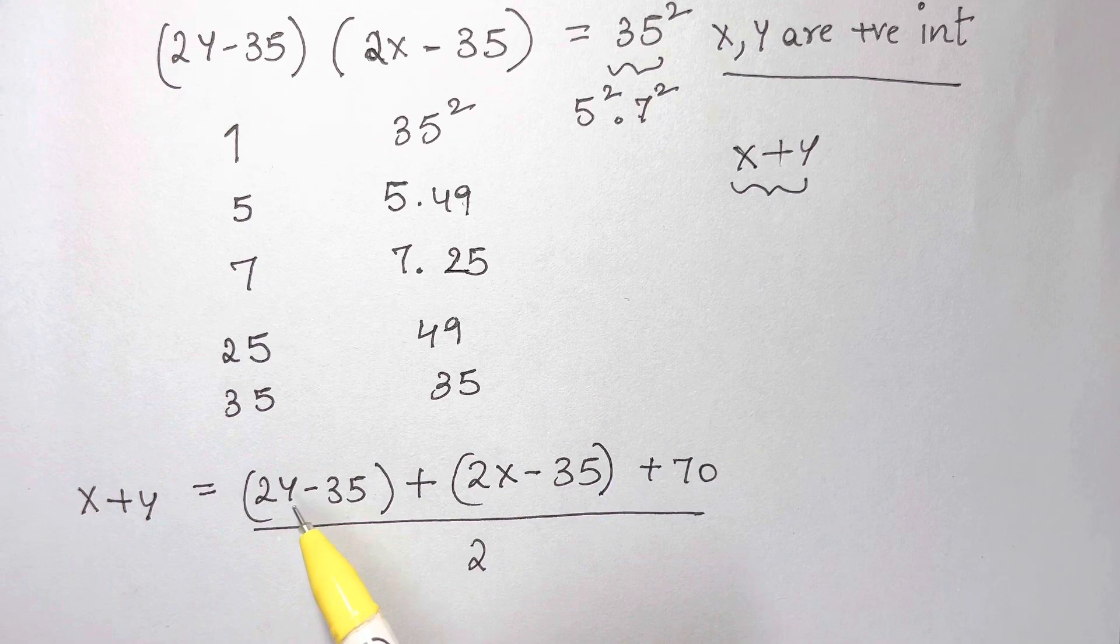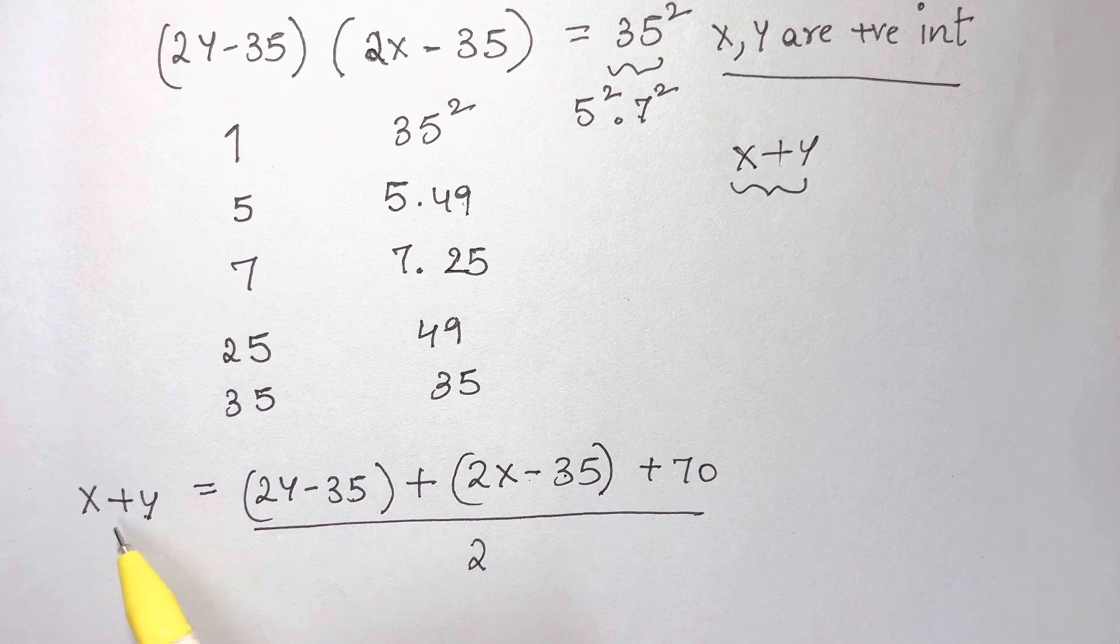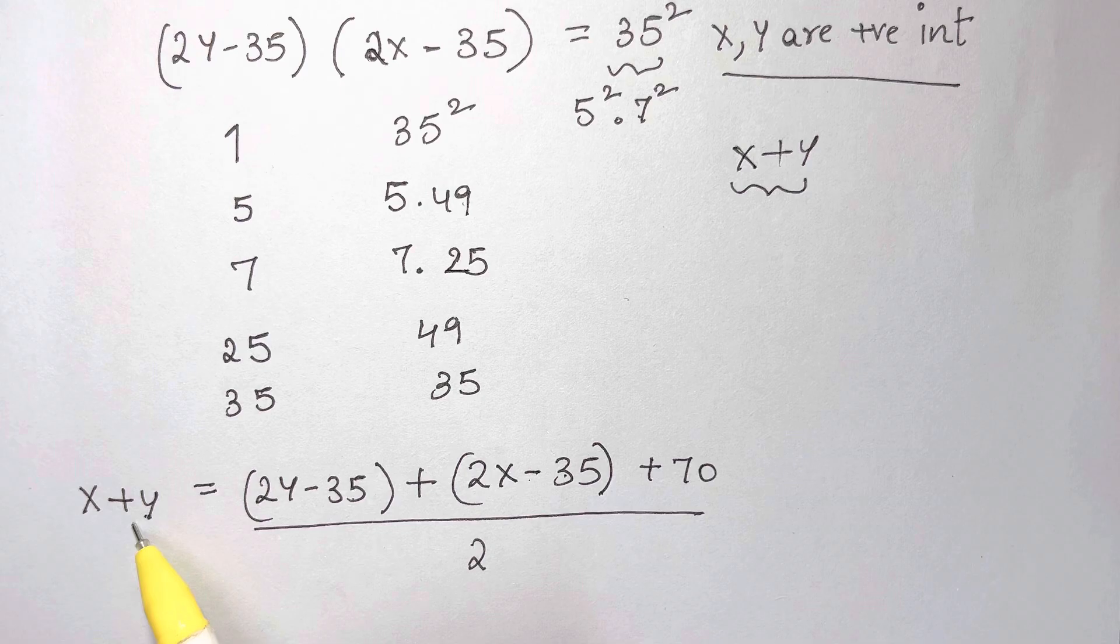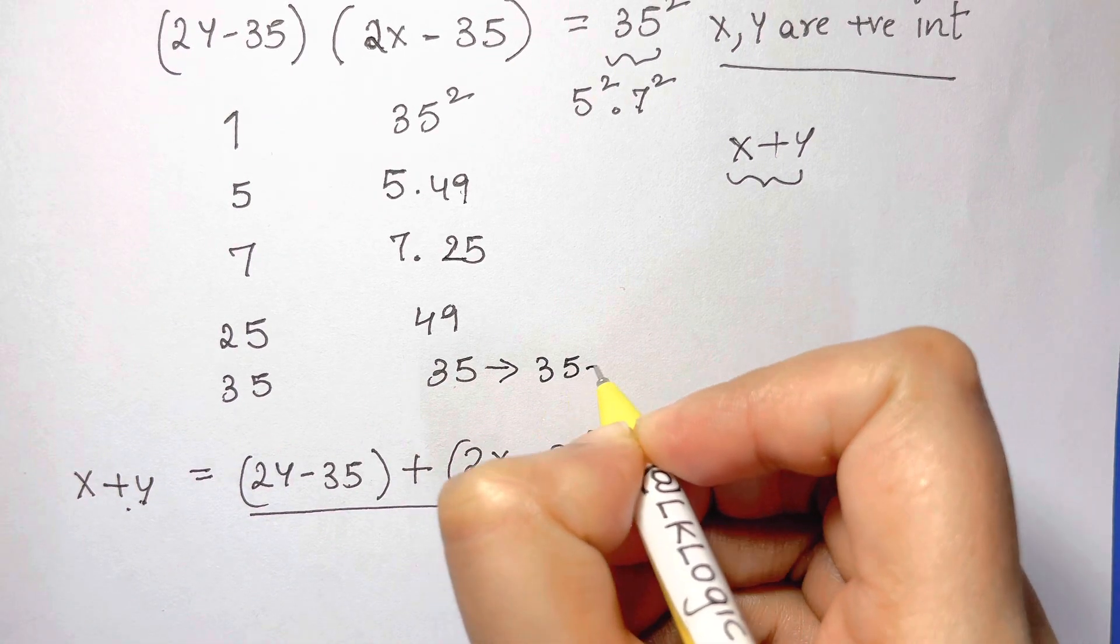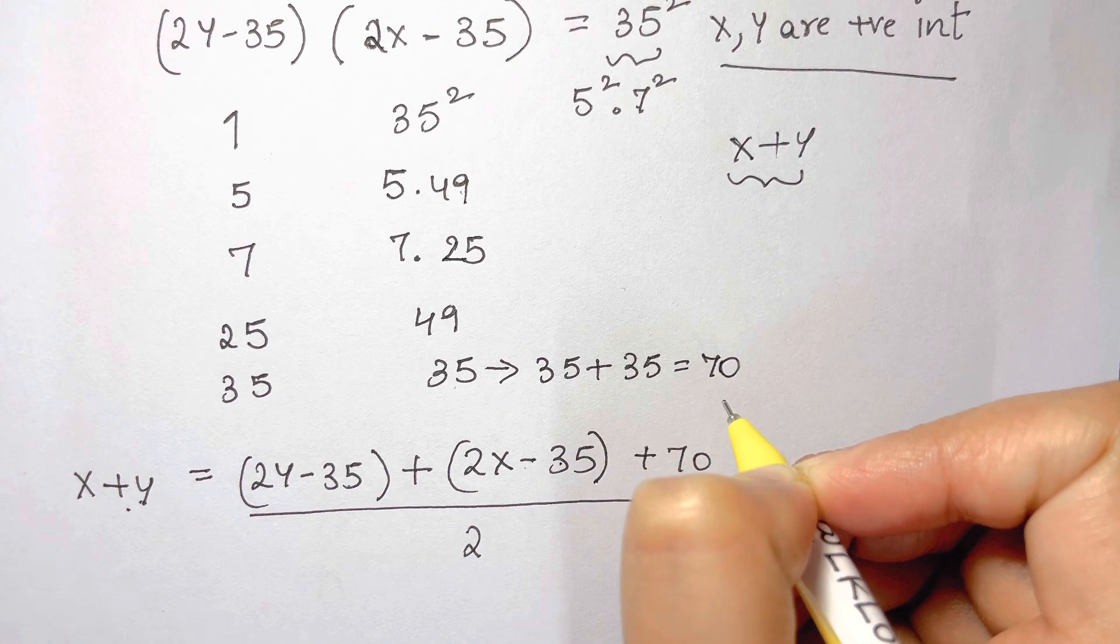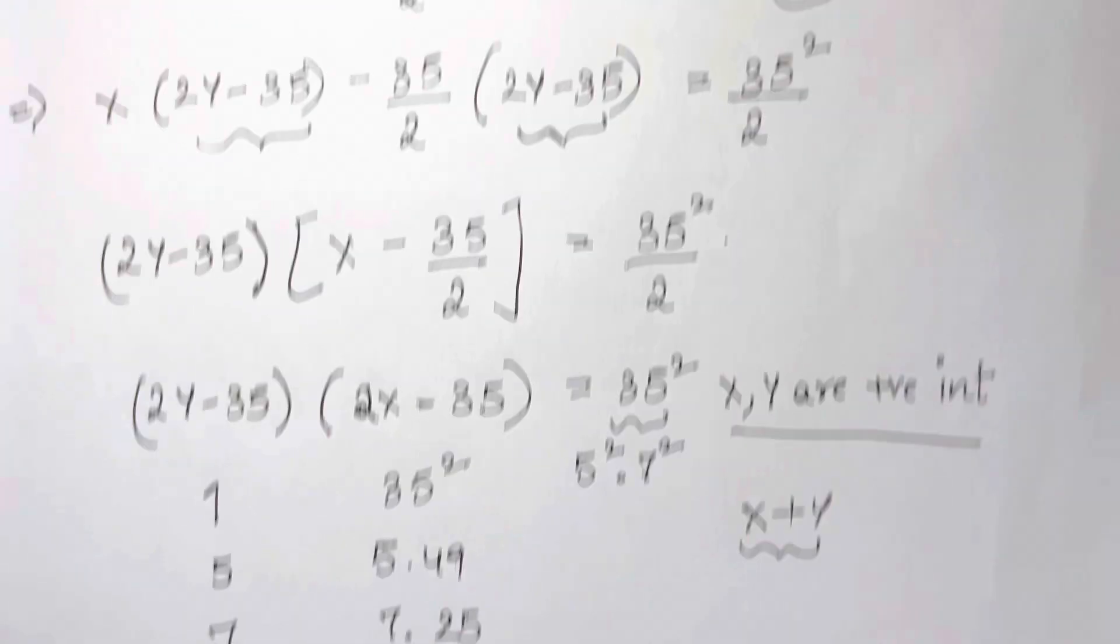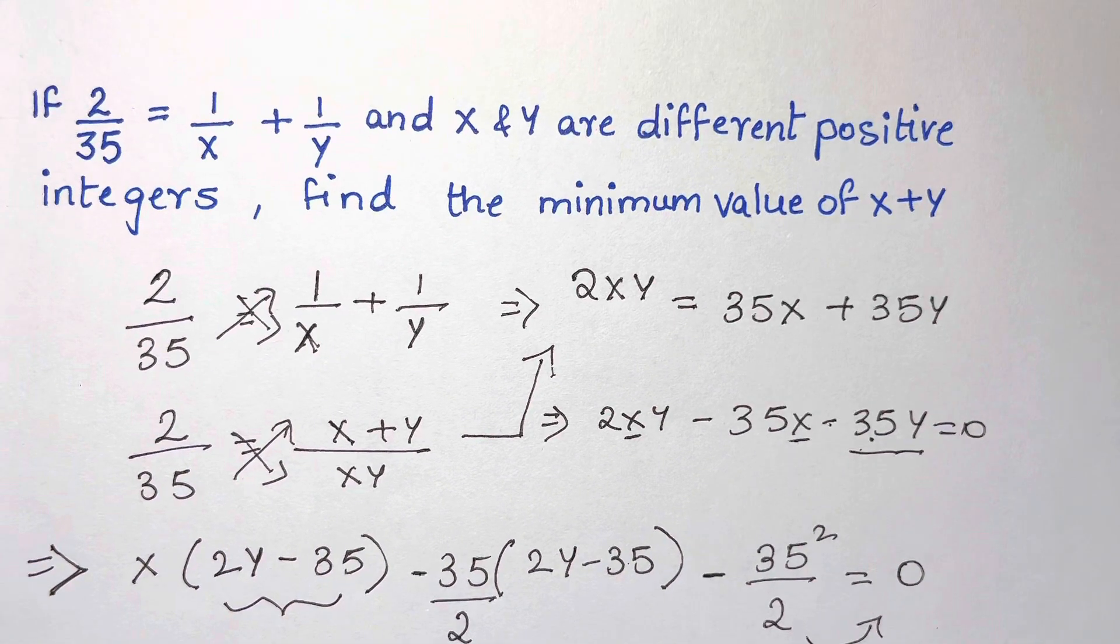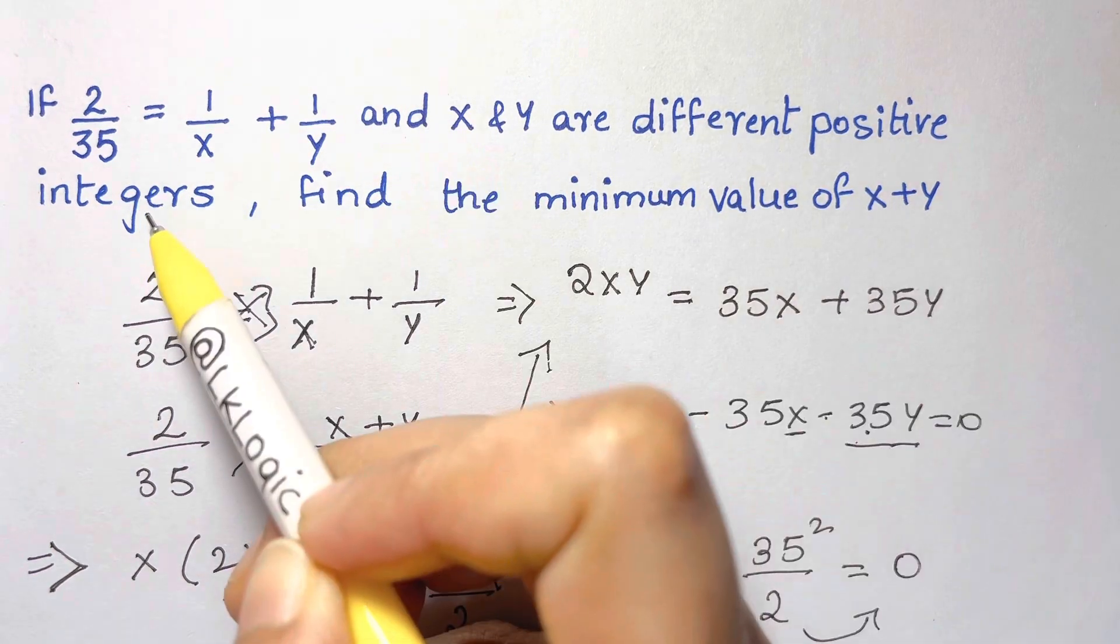If 2y minus 35 plus 2x minus 35 is minimum, then x plus y will be minimum here. And here we can clearly see that 35 plus 35 equals 70. And here most of the people do mistake because in the question, it is clearly mentioned that x and y are different positive integers.